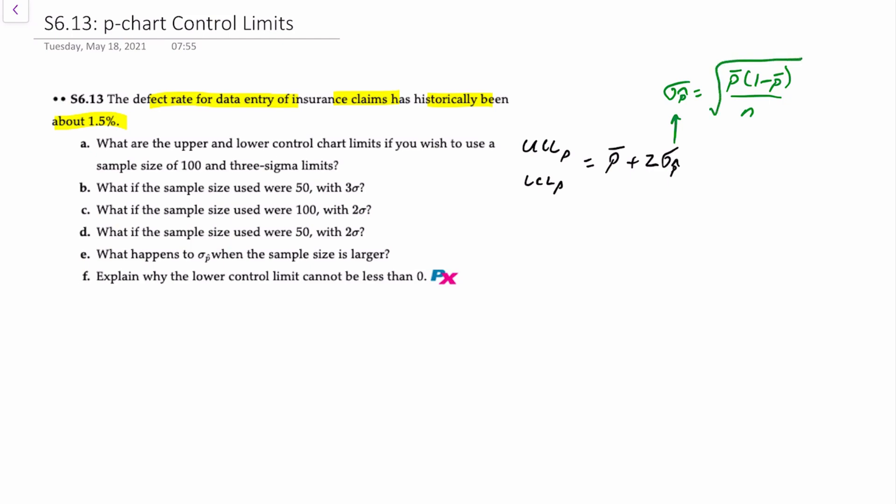That's what we'll use for our formula as we progress. For requirement A, we're asked to determine the control limits if we use a sample size of 100 and three-sigma limits, or basically z equals 3.